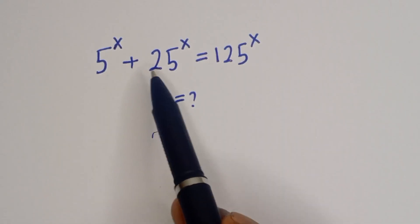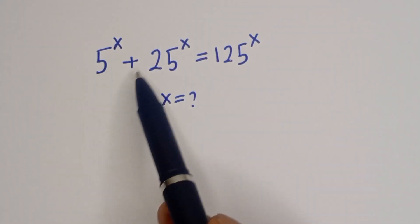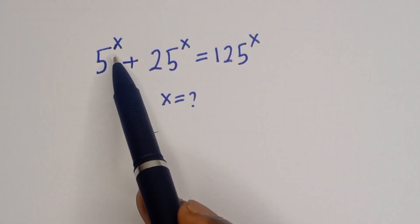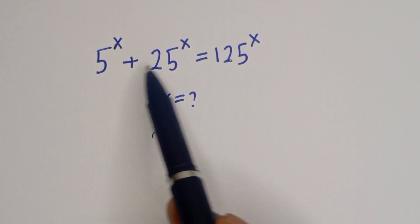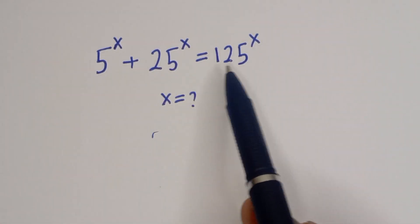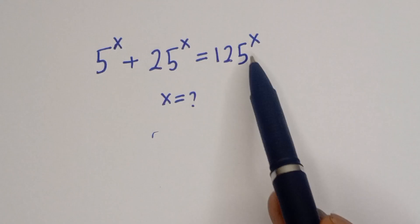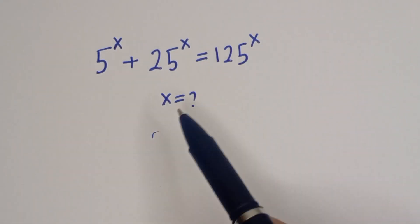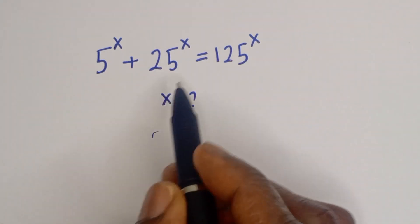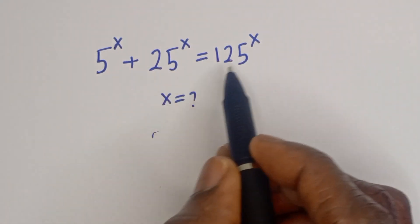Hello, welcome to Magic How-To. We will solve for s in this equation: 5 to the power of s plus 25 to the power of s is equal to 125 to the power of x.